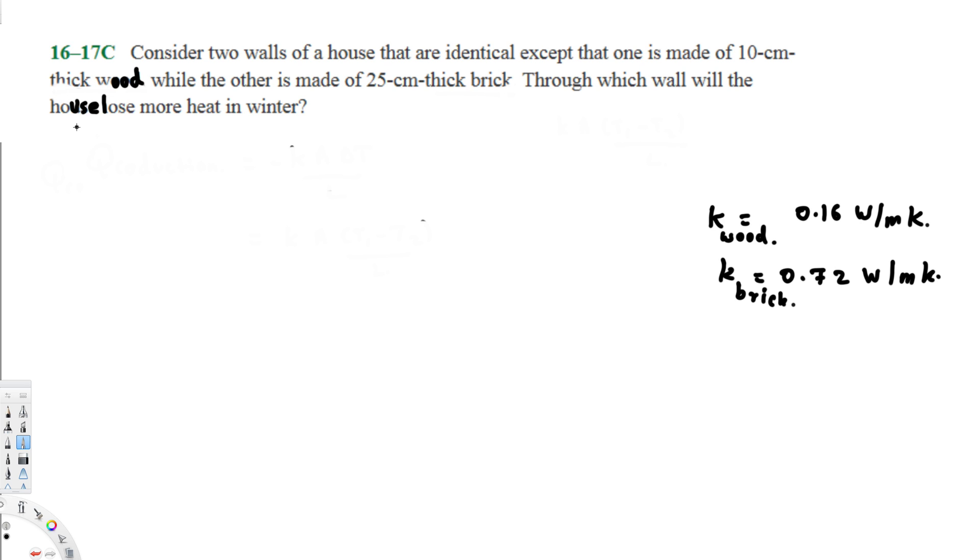Hey, what's going on guys, let's do this problem right here. This question is asking: consider two walls of a house that are identical except that one is made of 10-centimeter thick wood while the other one is made of 25-centimeter thick brick. Through which wall will the house lose more heat in the winter?